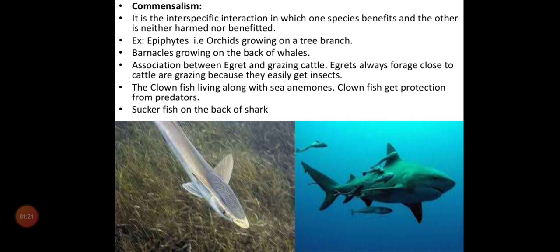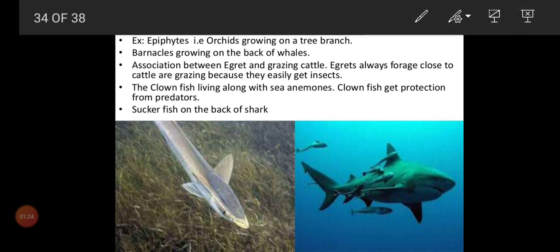Another example is barnacles growing on the back of whales. Barnacles are arthropods and they grow on the back of whales. Wherever the whale goes, the barnacles also travel and get food from other areas. They only use the whale for a place to stay, so there is no disturbance for the whale.